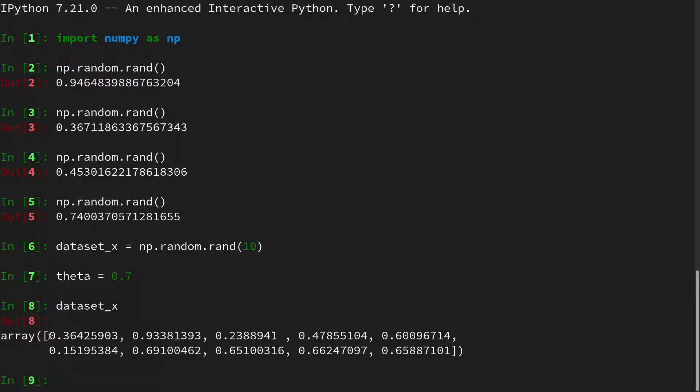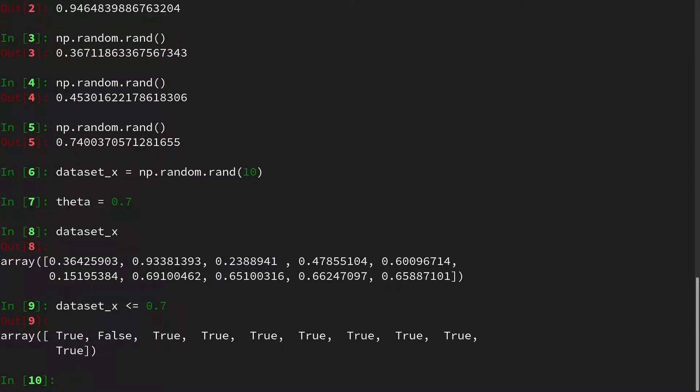And for this we are sampling this uniform distribution 10 times. And then let's define a theta at 0.7. And we can, of course, also look at the data set. We see, well, according to our way of doing this, there would be good weather, bad weather, and so on and so forth. And now we have to implement the way of transforming our data set of the uniform distribution to the Bernoulli distribution. And we do this as follows. So we say the data set X is smaller equal to 0.7. And in NumPy this means a component-wise comparison. And we see we have a true, false, true, true, true, and so on. Actually only one times a bad weather.